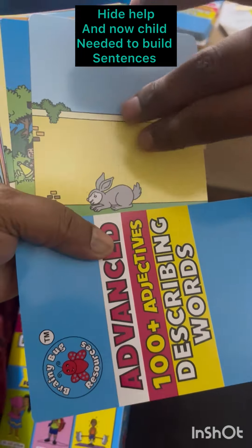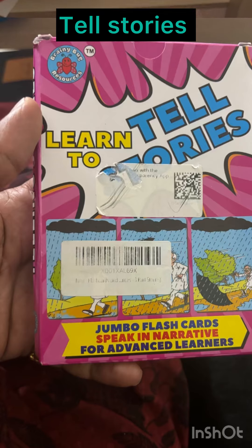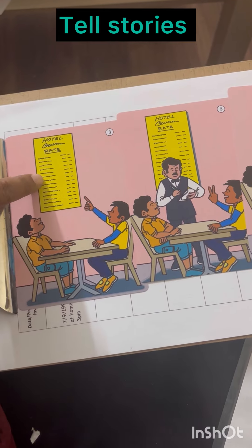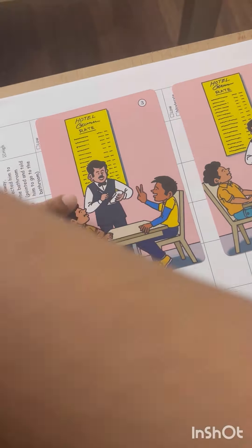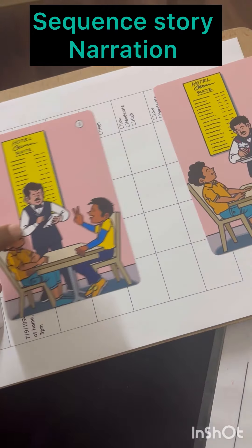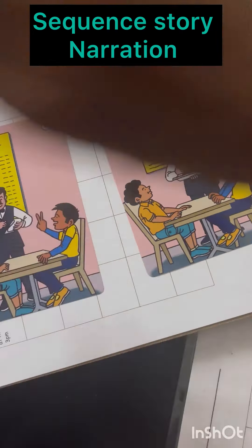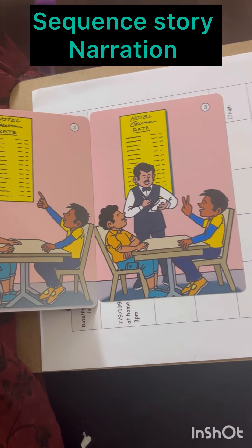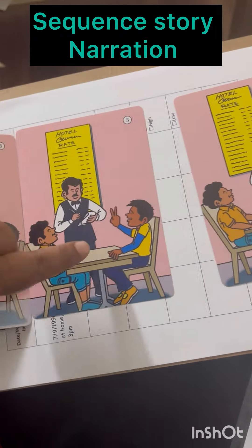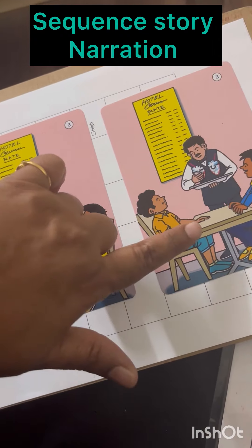The last activity is storytelling using three-card stories. First, arrange the three cards in sequence, then do narration. If the child has the sequence wrong, help them find the right sequence. If you have daily practice, it will help teach the child advanced language.